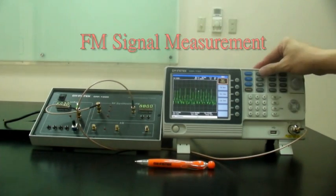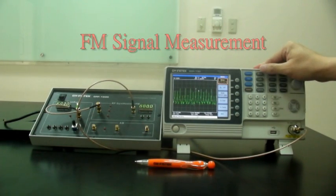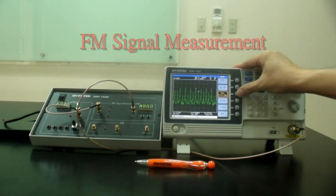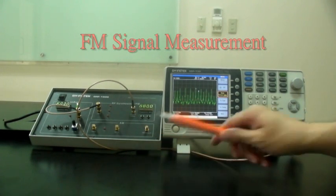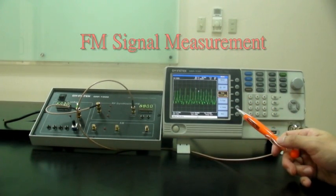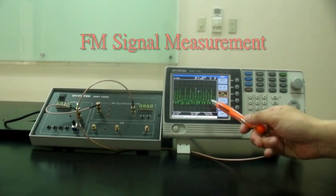Press marker F3 delta. Now you will see the modulating signal frequency between two markers at 300 kHz.